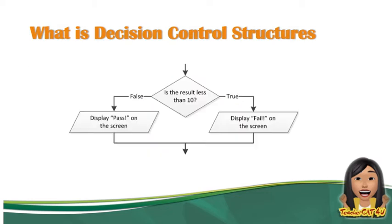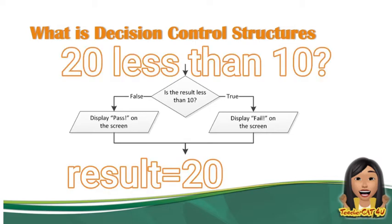This is the sample flowchart of decision control structure. This is the condition: is the result less than 10? For example, the value of result is 20. Is 20 less than 10? False. Therefore, it will display the word 'pass' on the screen.